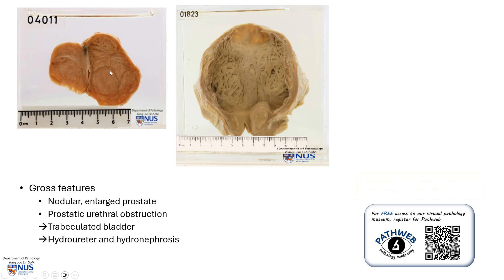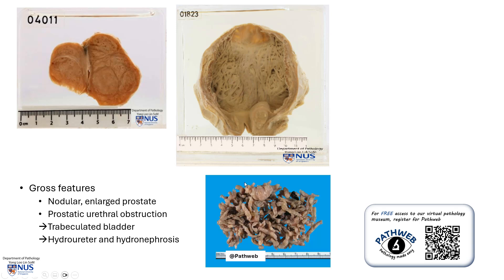Here we can see some gross features where we can make out this nodular enlargement of the prostate gland, and here is the urethra which is often narrowed. As a result, the bladder often shows these trabeculations, and in very severe untreated long-standing cases there may be accompanying hydroureter or even hydronephrosis. This is an example of a surgical specimen from a transurethral resection of the prostate — we often get what we call prostate chips, which are then examined under the microscope showing features of BPH.